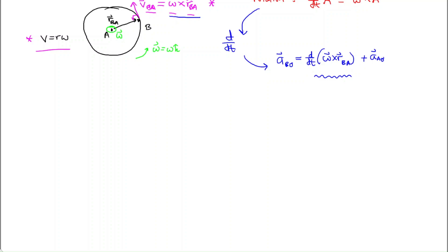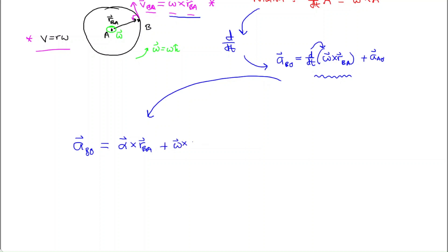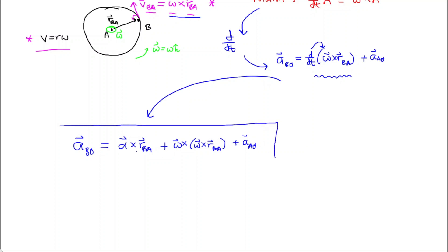Continuing the derivative process: acceleration BO equals alpha cross r sub BA, plus omega cross omega cross r sub BA — this is a triple cross product involving three vectors — plus acceleration AO. Even though we've been discussing planar rotations, this expression is general.